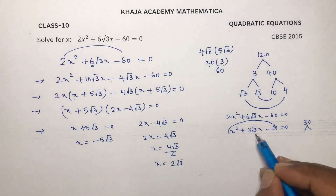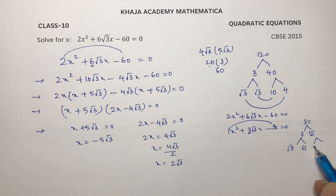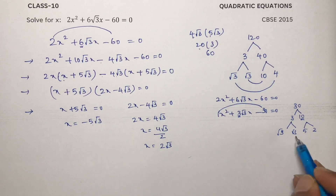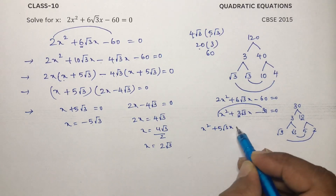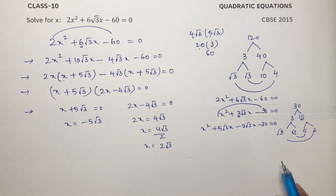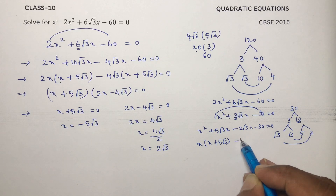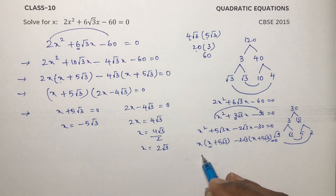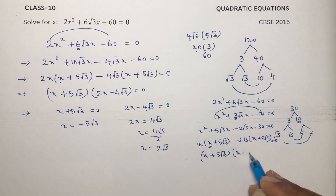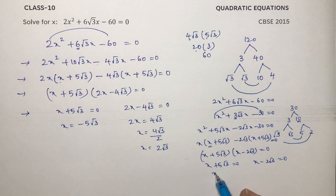We need root 3 here, so write 3 into 10. For this 3, change it as root 3 into root 3. With the help of 10, we need to get 3, so write 5 into 2. So: x squared plus 5 root 3 x minus 2 root 3 x minus 30 equals 0. Taking x common: x plus 5 root 3. Taking minus 2 root 3 common: x plus 5 root 3 equals 0. So x plus 5 root 3 into x minus 2 root 3 equals 0, giving x equals minus 5 root 3 and x equals 2 root 3.